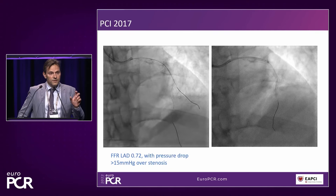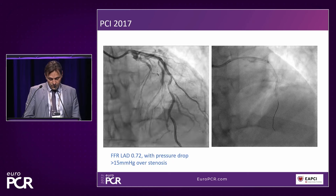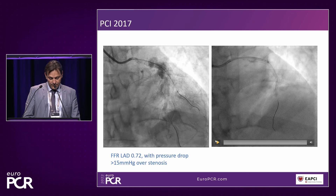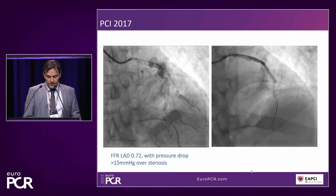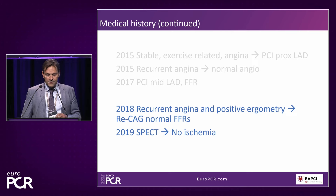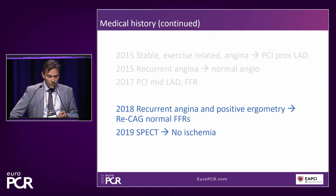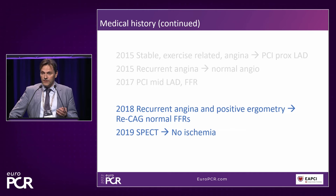This time the angio looked normal, FFR was performed and was still within the normal range. He went back home and was still in outpatient clinic follow-up, with many more tests to follow. In 2019, he had a SPECT scan not showing any ischemia. In 2021, he was again referred to the outpatient clinic, still having the same exercise-related chest pain. He noted there was really not much effect of the previous PCIs. He was on aspirin, calcium channel blocker, and statin. He was then referred to the cath lab for suspected coronary vasomotor dysfunction and full coronary function testing.